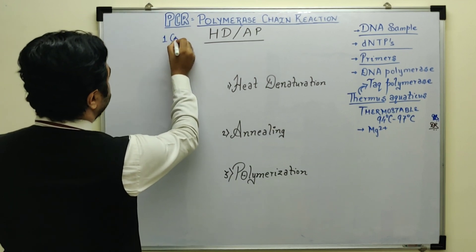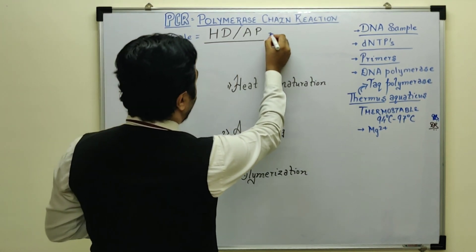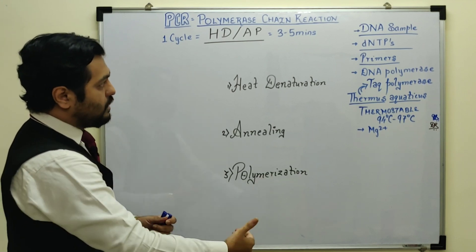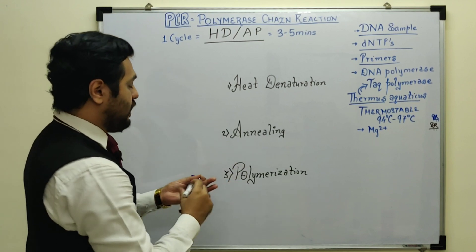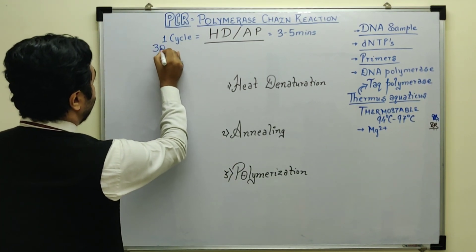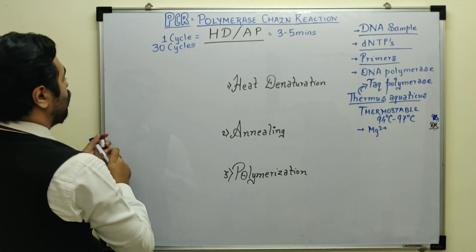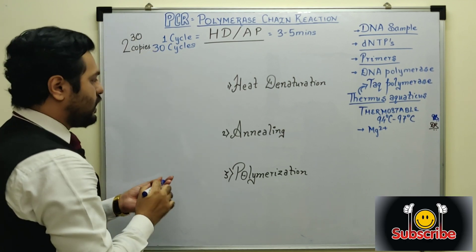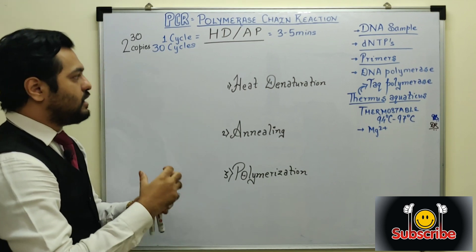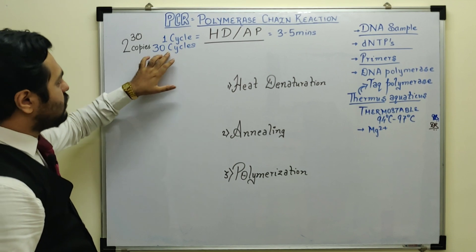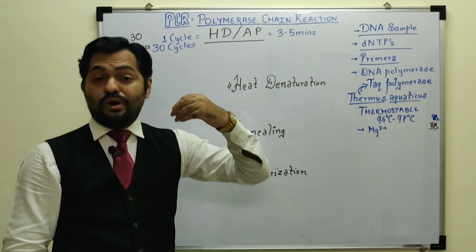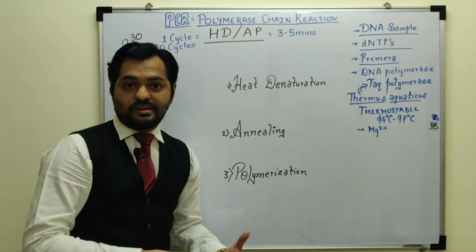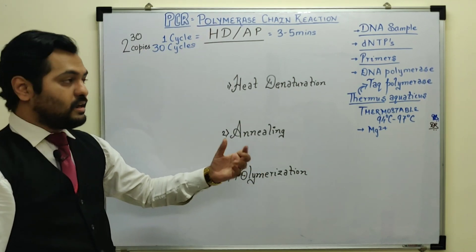One cycle of PCR — heat denaturation, annealing, polymerization — will take around 3 to 5 minutes. In one cycle, 1 DNA becomes 2, and the cycle repeats. We can perform approximately 30 cycles. After 30 cycles there is a chance of errors originating, but up to 30 cycles it works well. 30 cycles × 5 minutes = 150 minutes maximum, and in that time billions of copies can be generated. That is why currently in coronavirus testing this real-time PCR technique is being used.